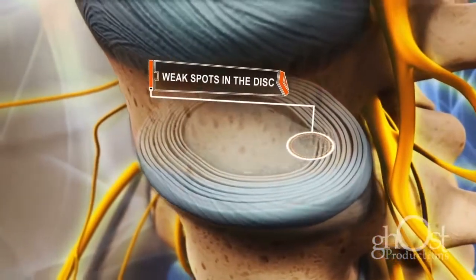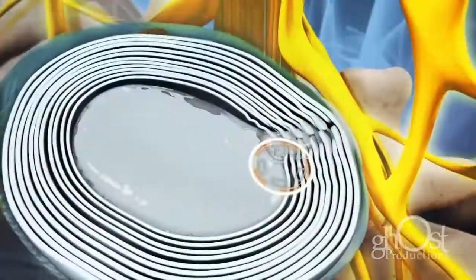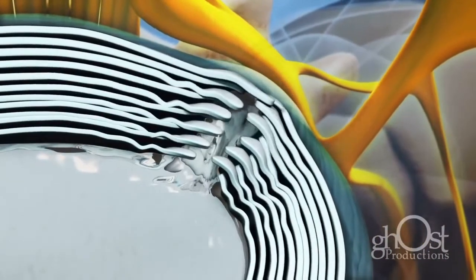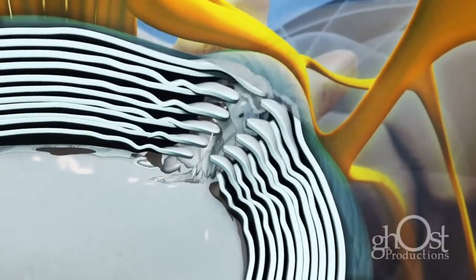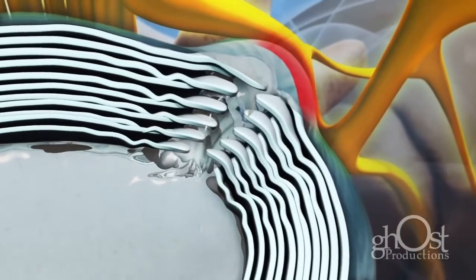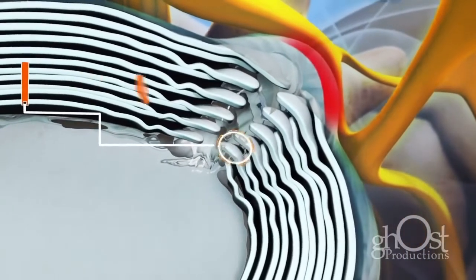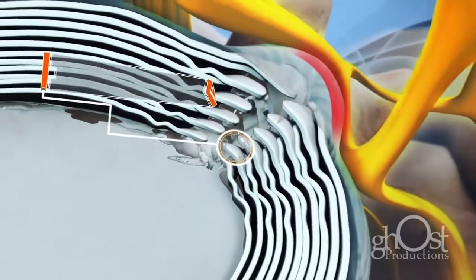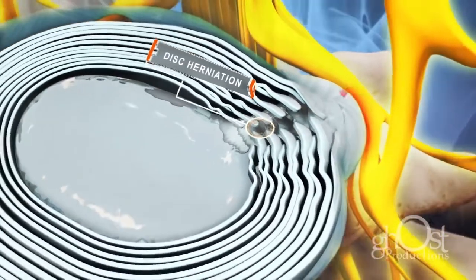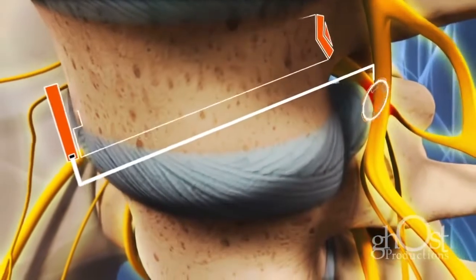Disc degeneration or trauma can cause the nucleus to herniate through the weakened layers of the outer disc and leak out of the annulus fibrosis into the spinal canal. In the case of a lumbar herniated disc, the weak spot in the annulus fibrosis is directly underneath the spinal nerve root, so a herniation in this area can put direct pressure on the nerve.